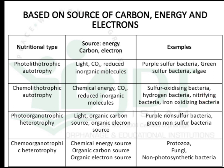The third classification is photo-organotrophic heterotrophs. In these, light is the energy source, organic carbon is the carbon source, and organic molecules are the electron source. Examples are purple non-sulfur bacteria and green non-sulfur bacteria.